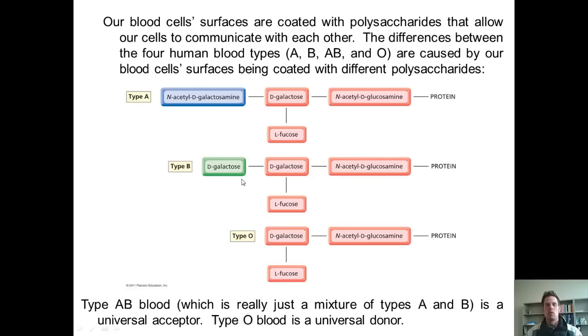That explains why someone who has type AB blood is a universal acceptor and someone who has type O blood is a universal donor.